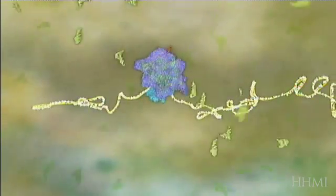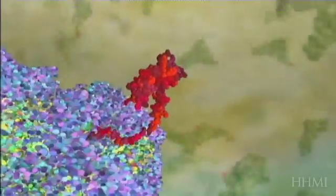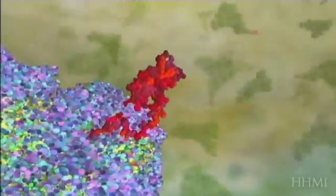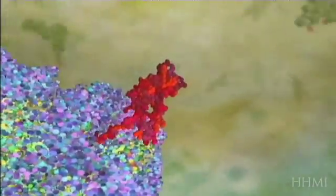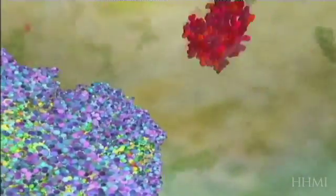These complex catalytic machines use the mRNA copy of the genetic information to assemble amino acid building blocks into the three-dimensional proteins that are essential for life. Let's see how it works.